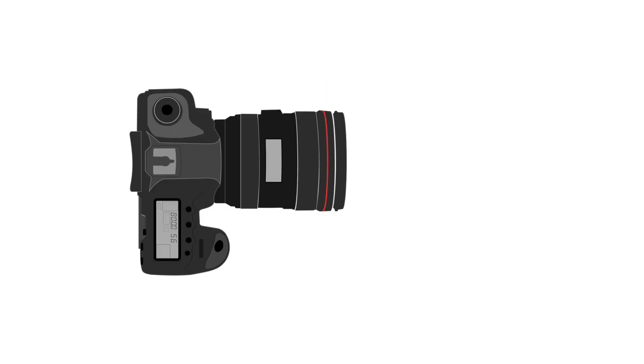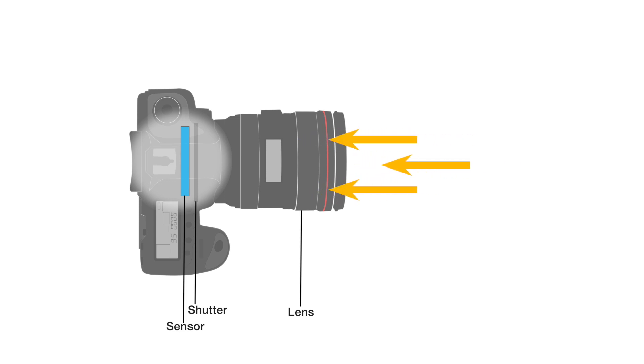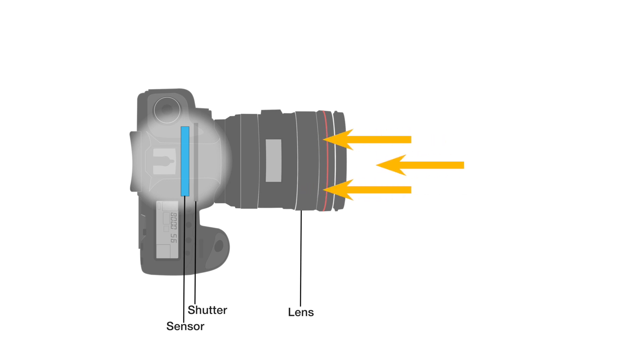At this point, we know that a digital camera works by letting light through a hole called an aperture that is in the lens onto a light-sensitive medium called a sensor. When you press the shutter button, a mechanism called a shutter exposes the sensor to light for a period of time. The sensor is digital and absorbs the light, then it captures and stores the image.